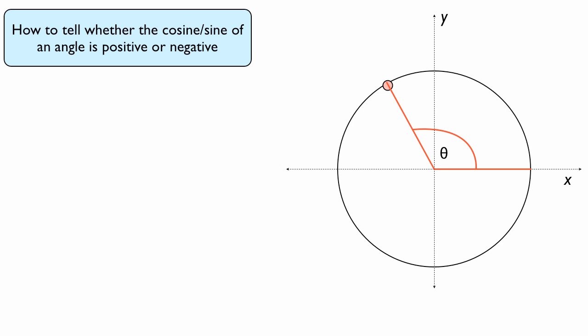And let's actually draw an angle, call it theta. And that angle and the unit circle form a point. And by definition, the coordinates of that point are cosine theta, sine theta.